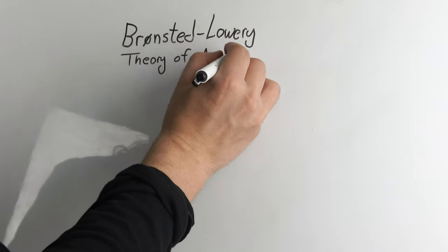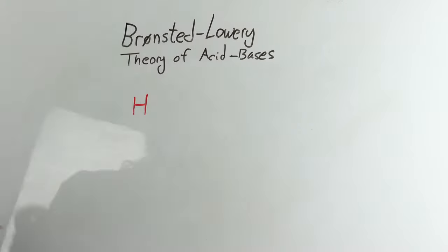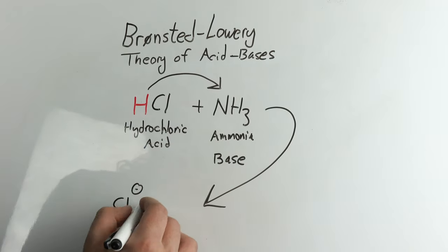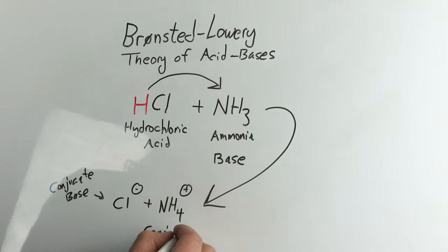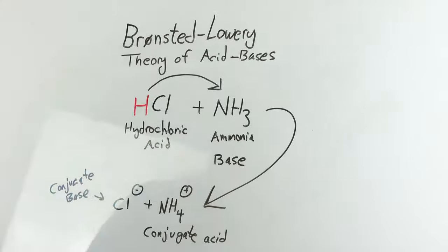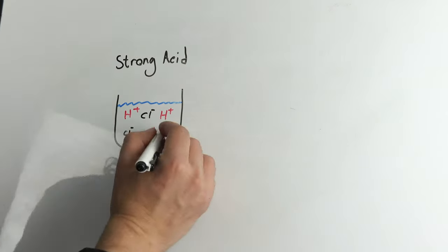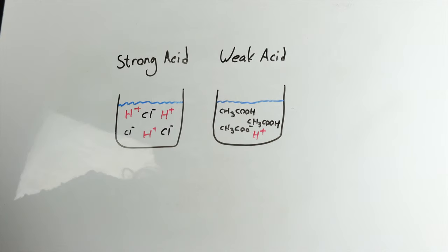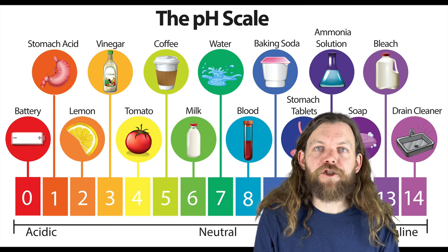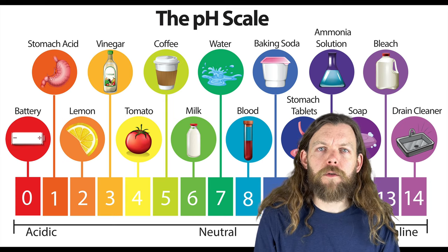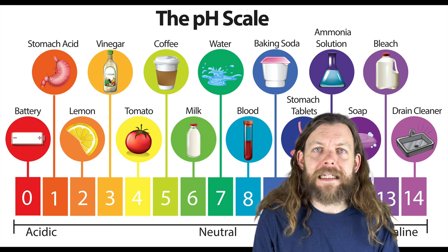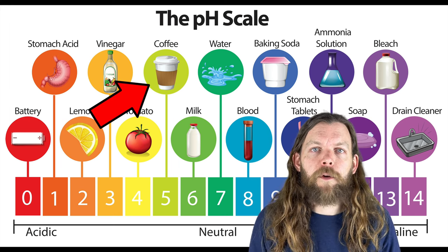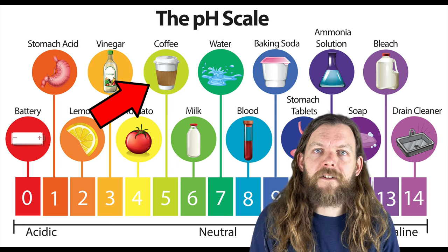First, a little background on acids. According to the widely used Brønsted-Lowry theory, an acid is a substance that releases or donates a proton in a chemical reaction. Acids can be described as weak or strong depending on how readily they release these protons. A pH scale is used to describe the acidity or alkalinity of a solution, but for our purposes, pH does not represent the perceived taste of acidity very well.